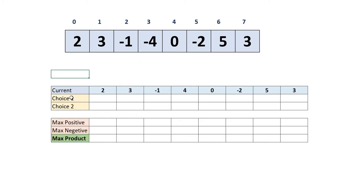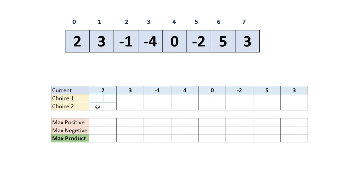Here I have a table with the input array and variables: choice 1, choice 2, maximum positive, maximum negative, and maximum product. Starting at the first index, we initialize maximum positive to the first number, maximum negative to the first number, and maximum product to the first number. From the second element onward, we multiply the current number with maximum positive and maximum negative to get choice 1 and choice 2.